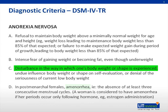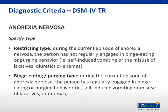There are two types of AN: restricting type, and the binge eating or purging type.